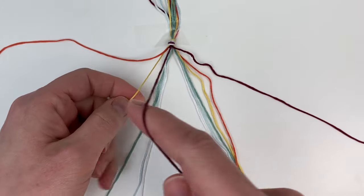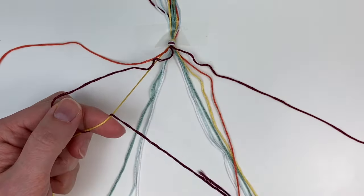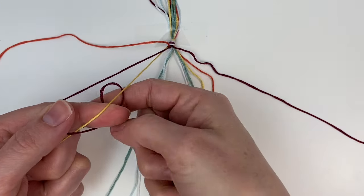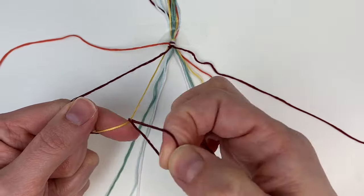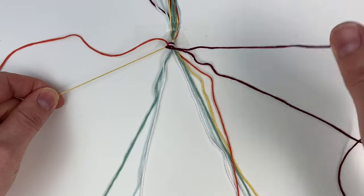Put that color aside and you're going to start on the next color and you're doing the same thing, making the four shape, pulling the end through the loop and tightening it up, and doing that twice for each color of cord. Just repeat this for each color on the left side and then I'll show you what you do on the other side.